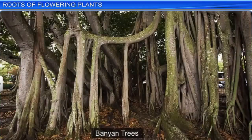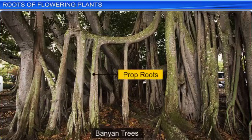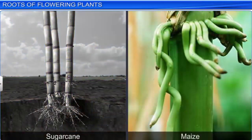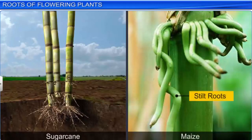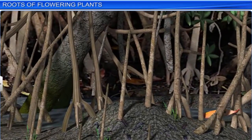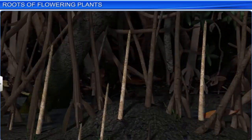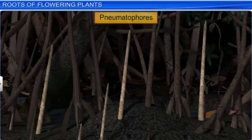Similarly, in banyan trees, the modified adventitious roots, also known as prop roots, help support the tree. In plants like sugarcane and maize, the roots emerge from the lower node of the stem to support the plant — these roots are called stilt roots. Roots also modify themselves to help get oxygen for respiration; such roots are called pneumatophores and are seen in plants like rhizophora that grow in swampy areas.